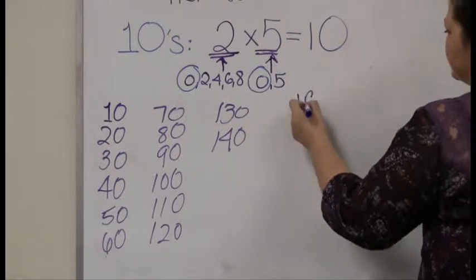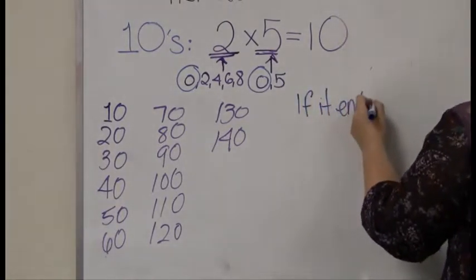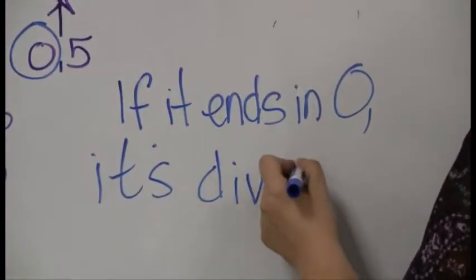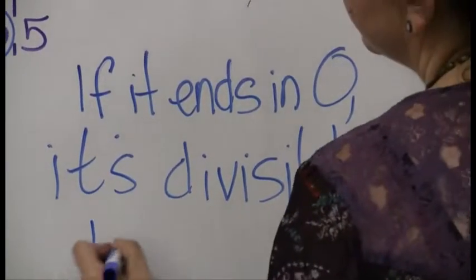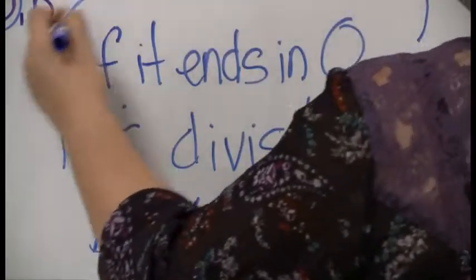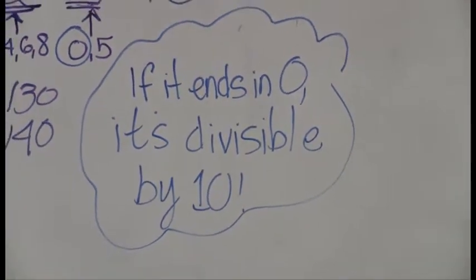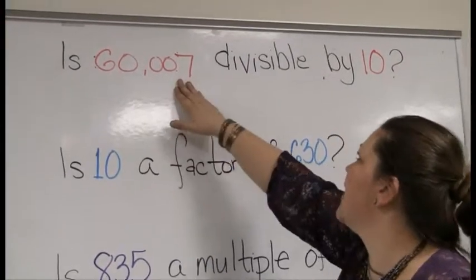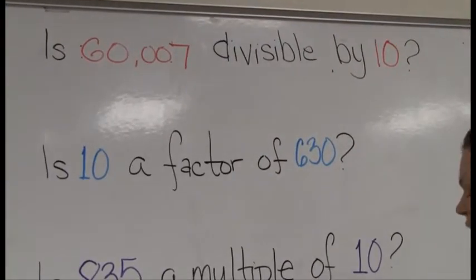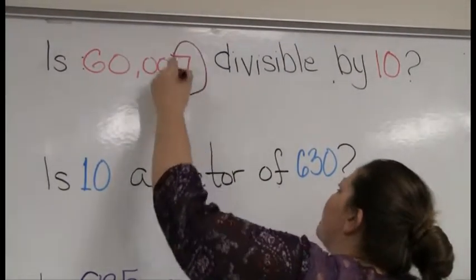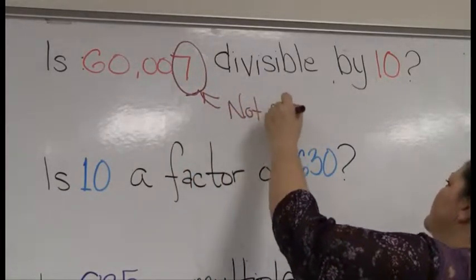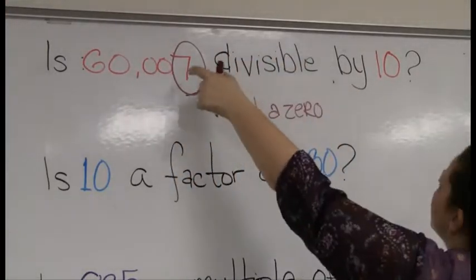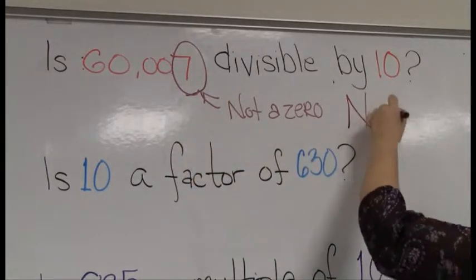That leads us to our divisibility rule for 10: if it ends in zero, it's divisible by 10 — 10 is a factor. Let's apply it. Is 60,007 divisible by 10? I look straight at the final digit — it's not a zero. It doesn't matter how many zeros are in between; I'm just looking at the very last digit, which isn't zero, so the answer is no.